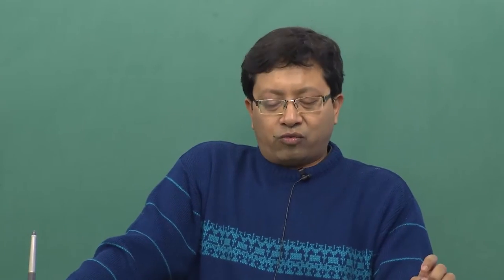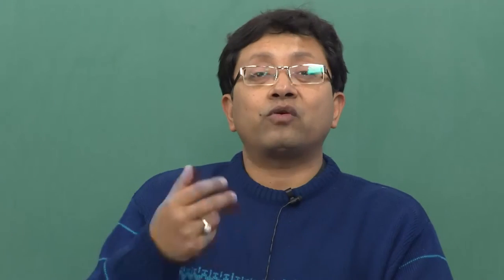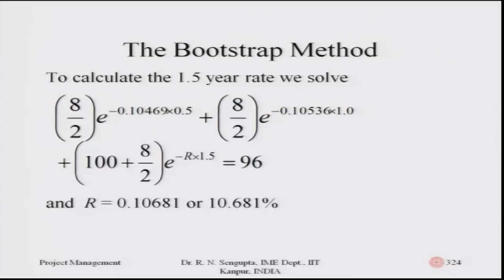Now we need to calculate the one-and-a-half-year interest rate. You can refer to the table in the twenty-sixth class. Eight rupees or dollars is paid on a six-month basis, so the investor gets eight divided by two per six months. The first value on slide 324 notes that eight by two is the amount paid after six months from today.